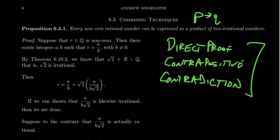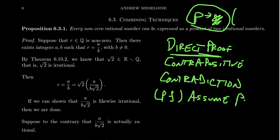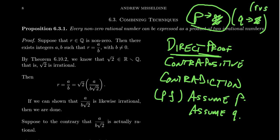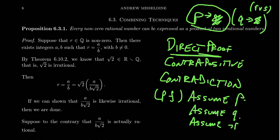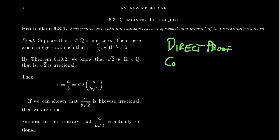As proofs get longer and more complex, it becomes necessary to combine different proof techniques. You might start with a direct proof, assume P, then need to prove Q — but Q might itself be a conditional Q implies R, requiring another direct proof. And if R is of the form 'R or S,' you'd assume not-R and try to conclude S. This creates proofs inside of proofs.